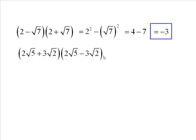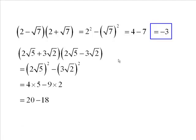And what about this one? Looks more complicated but it's not really. Basically, you just square both parts and have a minus sign between them. Bear in mind that squaring 2 root 5 is 4 times 5 and then 9 times 2, 20 minus 18 is 2. Once again a very complicated expression becoming a very simple integer expression.